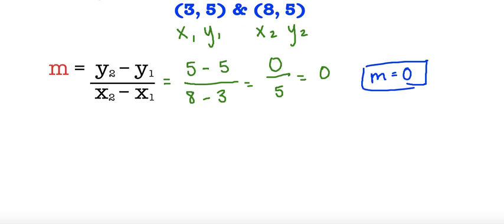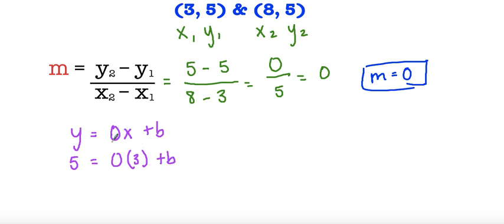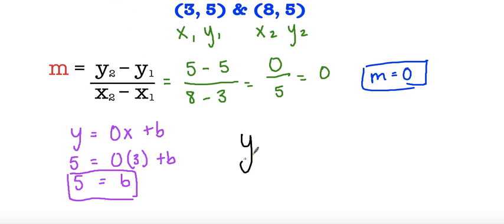Now we're going to find our y-intercept. We know that y equals 0x plus b. We can use the first coordinate, so 5 equals 0 times 3 plus b. Remember, this term is just 0, so we get 5 is equal to b because 0 times 3 is 0. Our y-intercept is 5. So y equals 5 — I don't need to write 0x because it's just 0. This type of linear equation gives us a horizontal line because our slope is not increasing at all, but we are going over 1 each time.